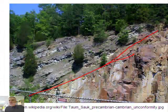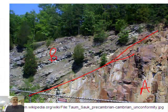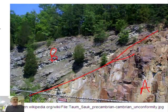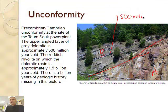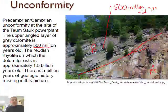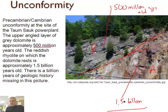So here we have rock A and here we have rock B — totally different rocks. If you read the text here, we discover that the top rock is 500 million years old and the bottom rock is 1.5 billion years old. That's a huge difference!